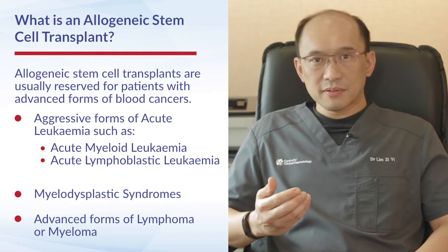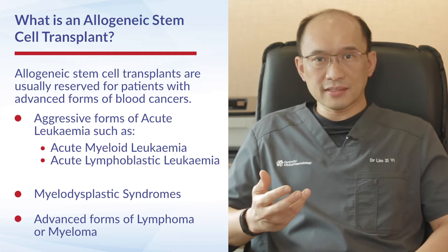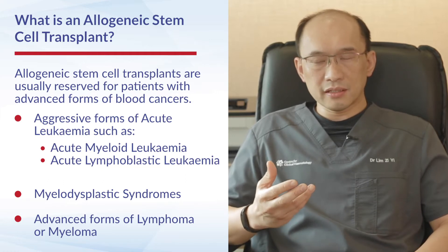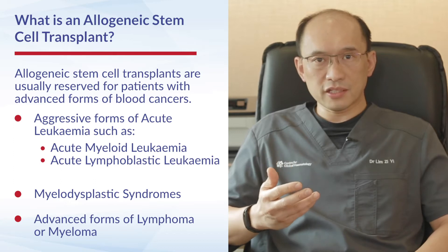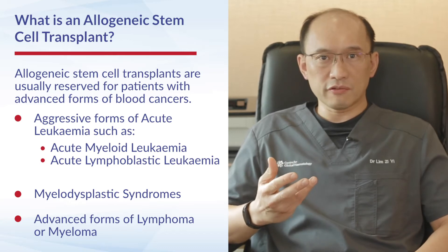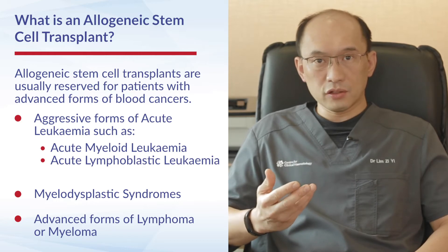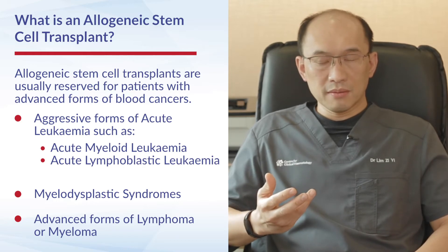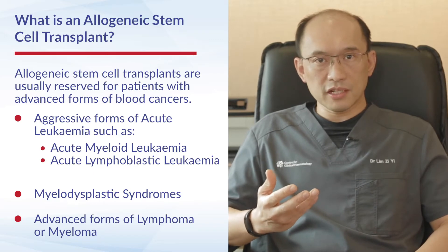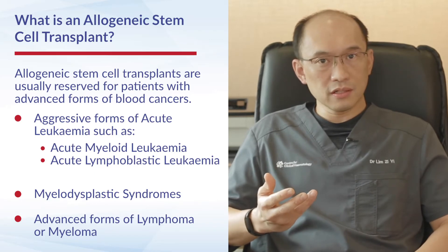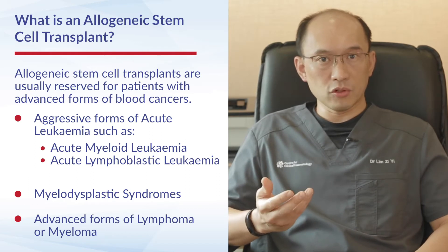Allogeneic stem cell transplants tend to be reserved for patients with advanced forms of blood cancers. The patients who most usually receive them tend to have aggressive acute leukemia, such as acute myeloid leukemia and acute lymphoblastic leukemia. Other patients who may benefit include those with myelodysplastic syndromes, advanced forms of lymphoma, or even myeloma.